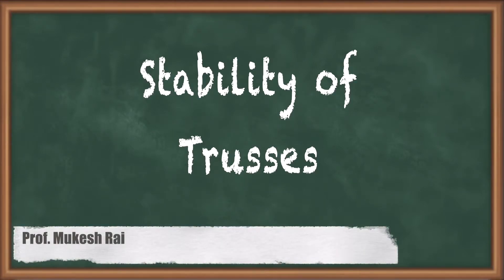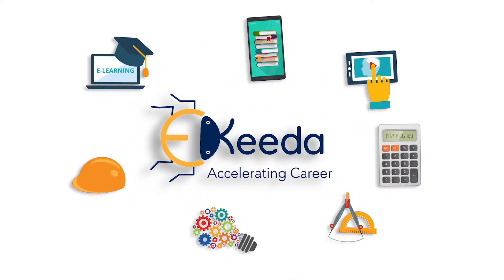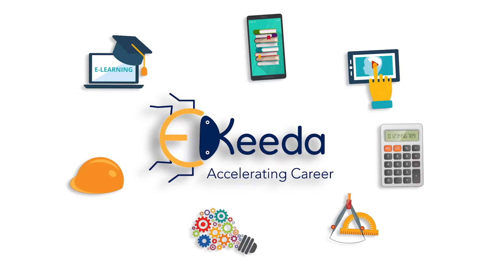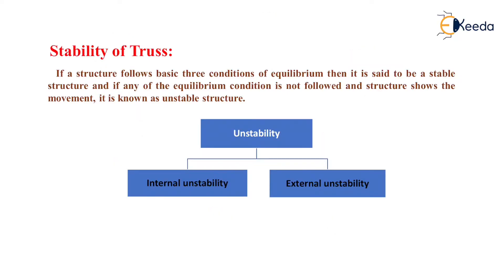Hello students, today we are going to discuss the stability of trusses. From the previous lecture we know that if the structure follows the basic three conditions of equilibrium then it is said to be a stable structure, and if any of the equilibrium conditions is not followed then the structure will show movement and it is known as an unstable structure.